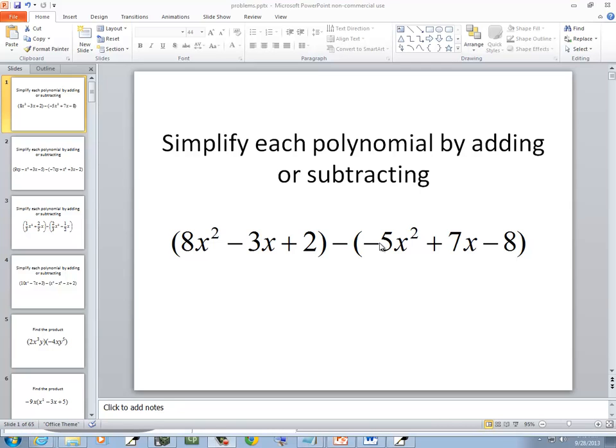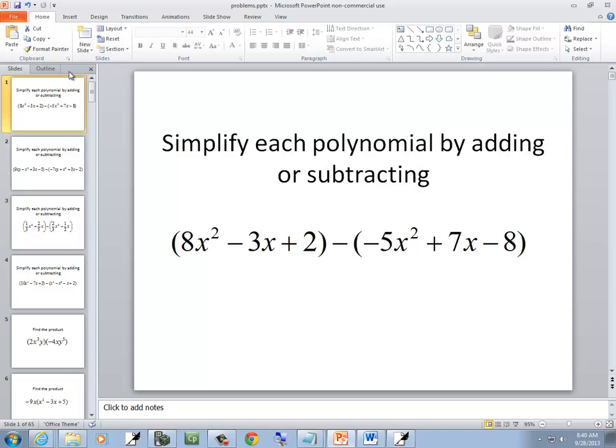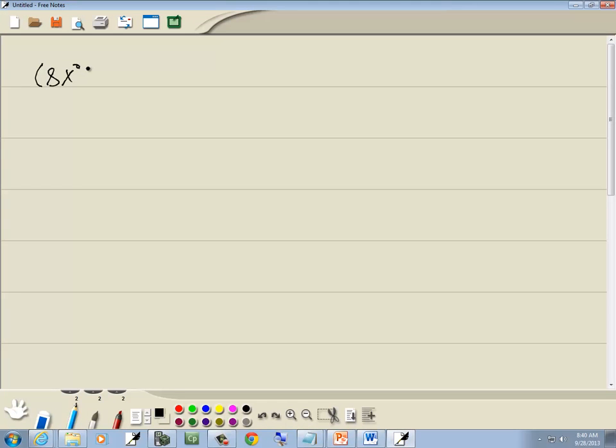In this problem we want to simplify each polynomial by adding or subtracting. So we got 8x² minus 3x plus 2 minus negative 5x² plus 7x minus 8.